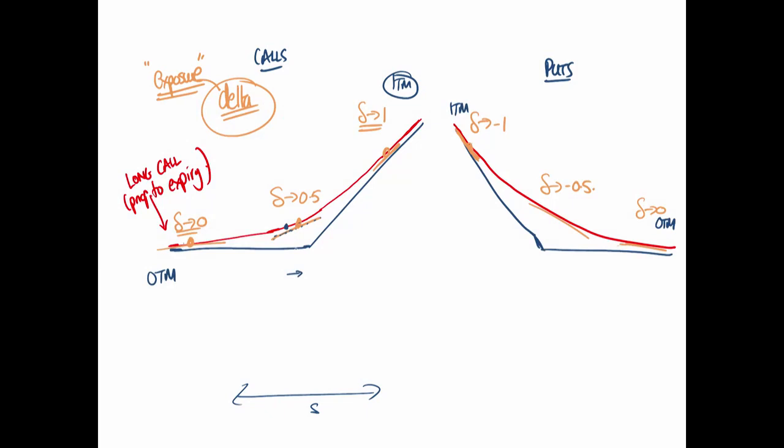Let's visualize how gamma behaves. The easy way to think about it is it's the curvature of the red line — how much the slope of the red line is changing when we shift the underlying asset around. If the slope has moved a lot when you shift the underlying, you've got high gamma; if it hasn't, you've got low gamma.